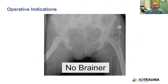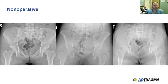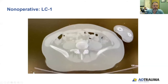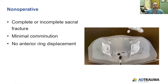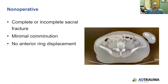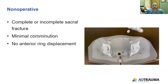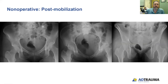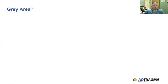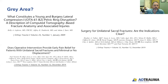So operative indications — some are obvious no-brainers. What about a small right-sided sacral fracture that's really not displaced? She has a zone one fracture. Non-operative management can be used for complete or incomplete sacral fractures with minimal comminution, minimal displacement, and no anterior ring displacement. Her post-mobilization films showed really no change, so she was successfully treated non-operatively. But there are gray areas, and that's usually in an LC1 pattern.